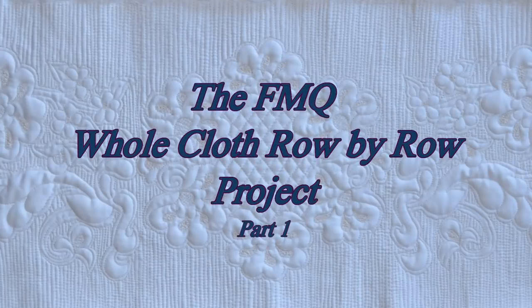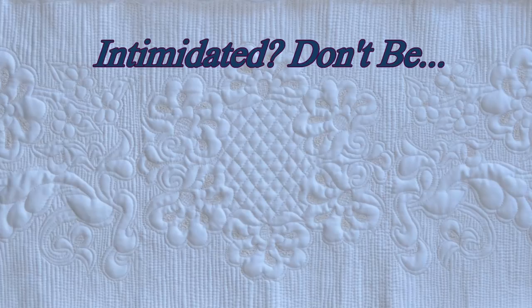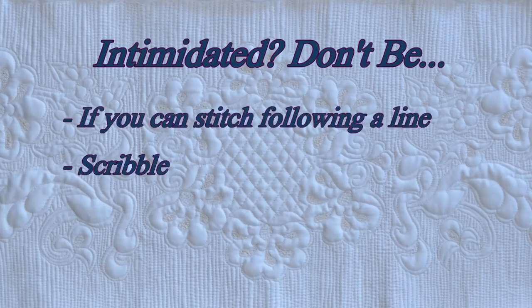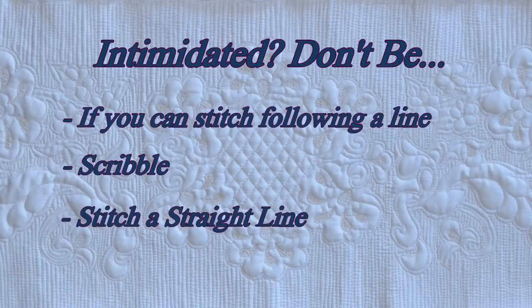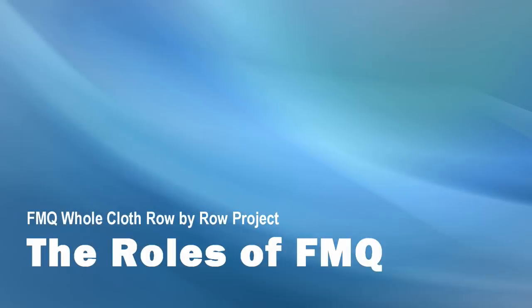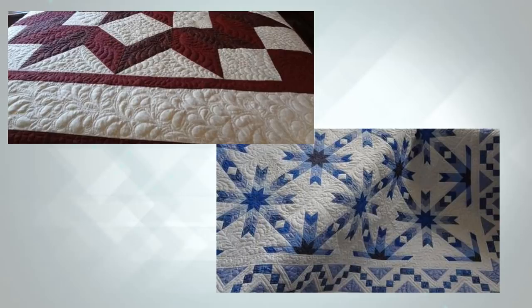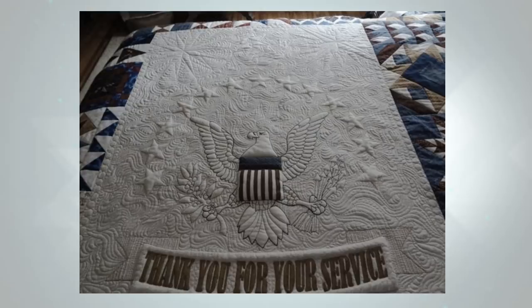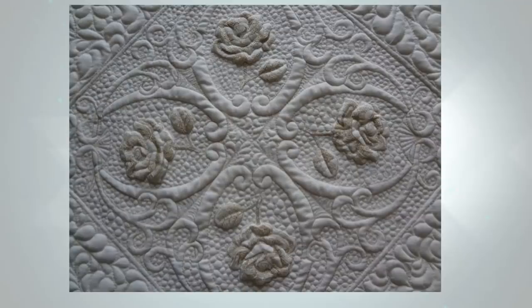Welcome to the free motion quilting whole cloth row by row project. When you look at this design, are you intimidated? Don't be. If you can stitch following a line, scribble, and stitch a straight line, then you can do it. Let's talk about the roles of free motion quilting. Most of the time we use it to accentuate a pieced quilt, but in this instance we are creating the entire design of the quilt with nothing but one solid piece of fabric, batting, and thread.